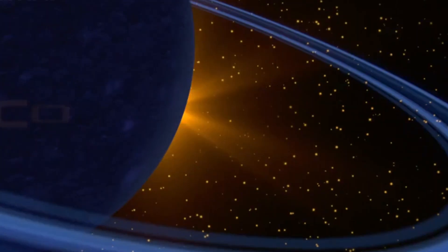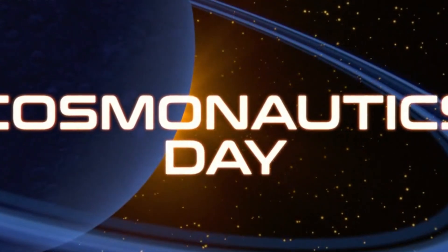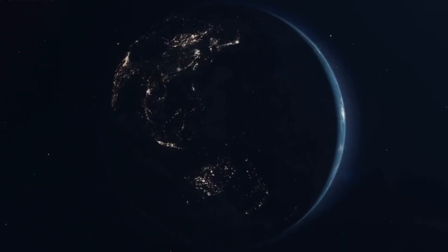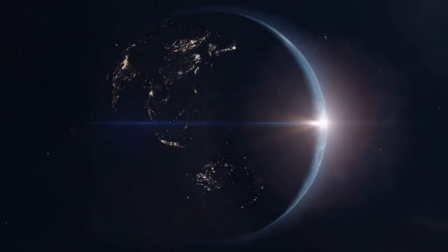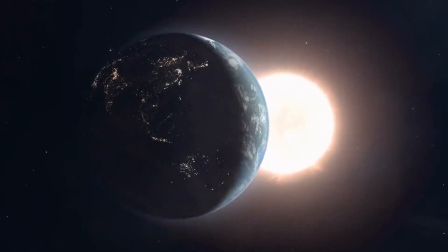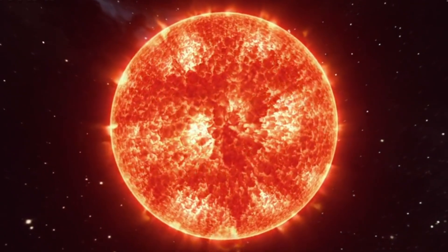LHS 3154b isn't the only planet defying expectations. Recently, scientists discovered another strange world named Haller, which orbits a star called Baikdu. This is a red giant, a star that has expanded significantly and should have destroyed any nearby planets. Yet, Haller remains, orbiting undisturbed.